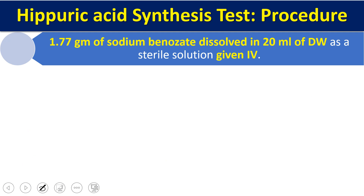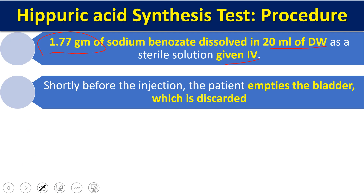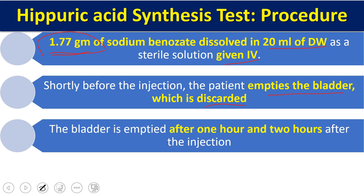There is another form of this test where instead of oral administration, we give an intravenous injection of sodium benzoate — 1.77 grams dissolved in 20 ml of distilled water, injected slowly. Before the injection, the patient must empty the bladder. Urine is collected after one hour and two hours post-injection, since IV administration bypasses the absorption time required for oral intake.